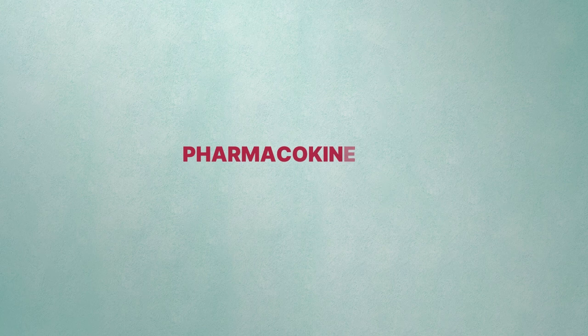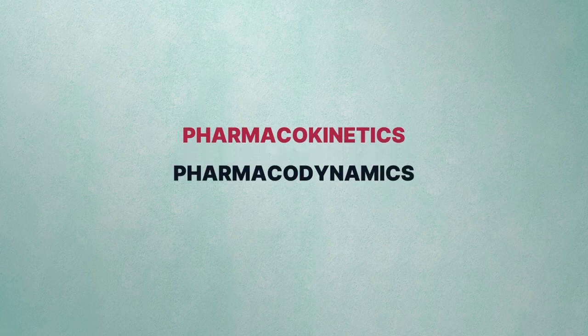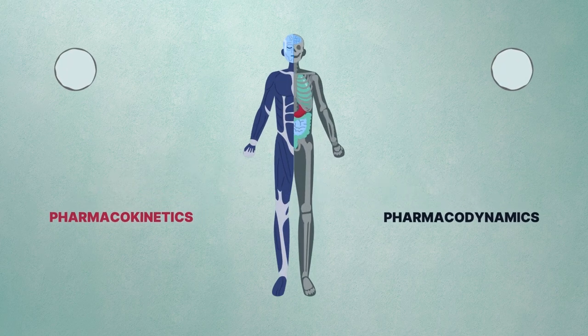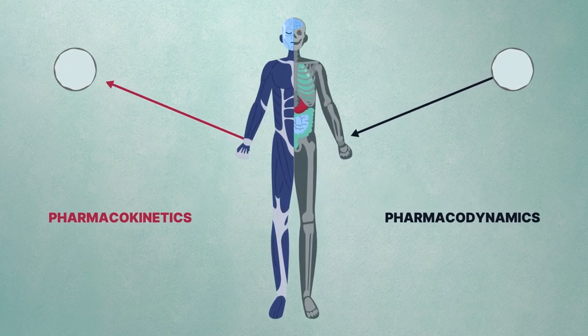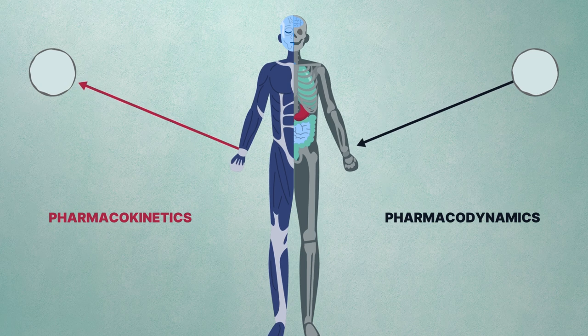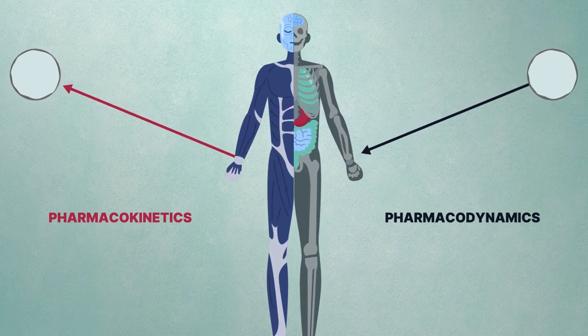The interaction between pharmacokinetics and pharmacodynamics is crucial for effective drug therapy. This relationship helps us design dosing regimens that achieve the desired drug concentration in the blood that is therapeutically effective without being toxic.